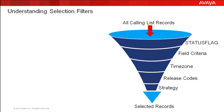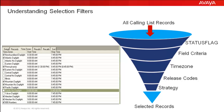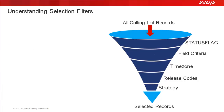The next one is the criteria for time zones. Here you specify the time zones that you want to select — you may select all time zones or some depending on your requirement. The records which have time zones from the ones you have selected are passed through, and the ones you have not selected are discarded.